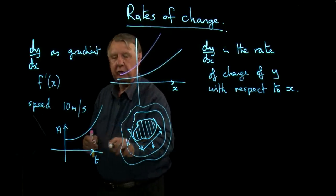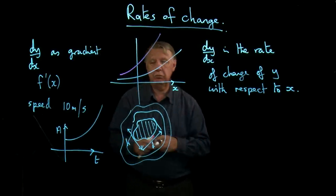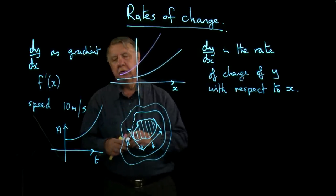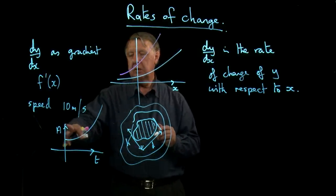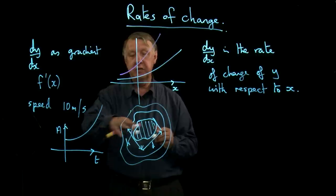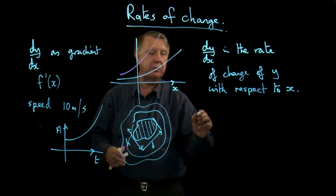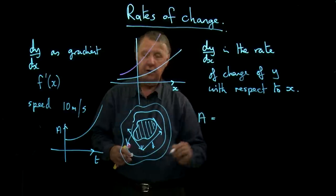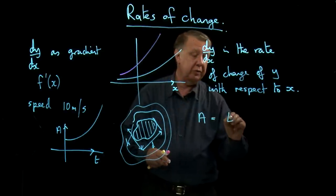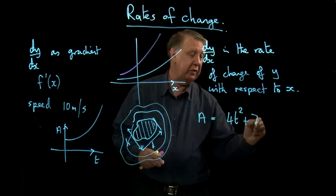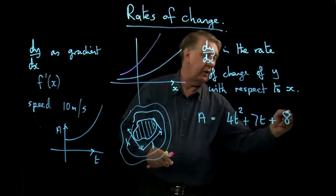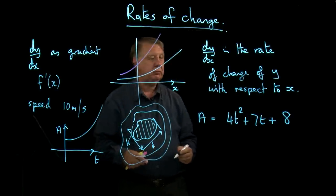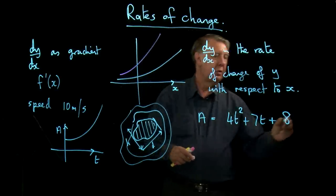Because I've got t down here, then I could talk about a formula for the area of the spillage in terms of the time. So it might be something like a equals 4t squared plus 7t plus 8 square metres.